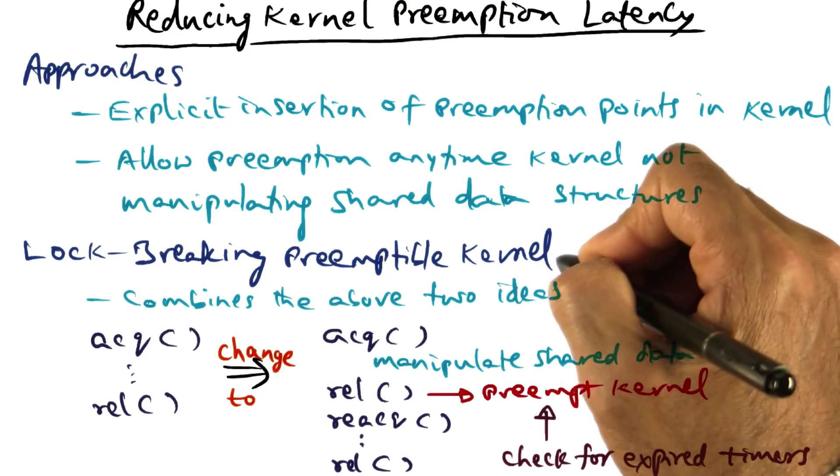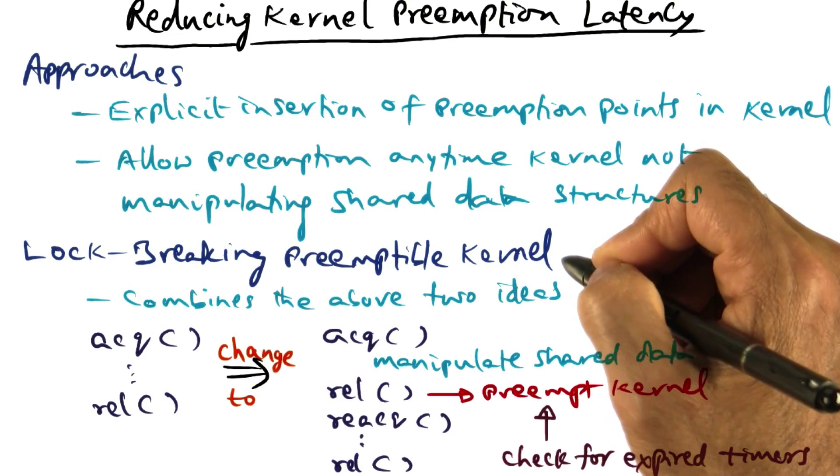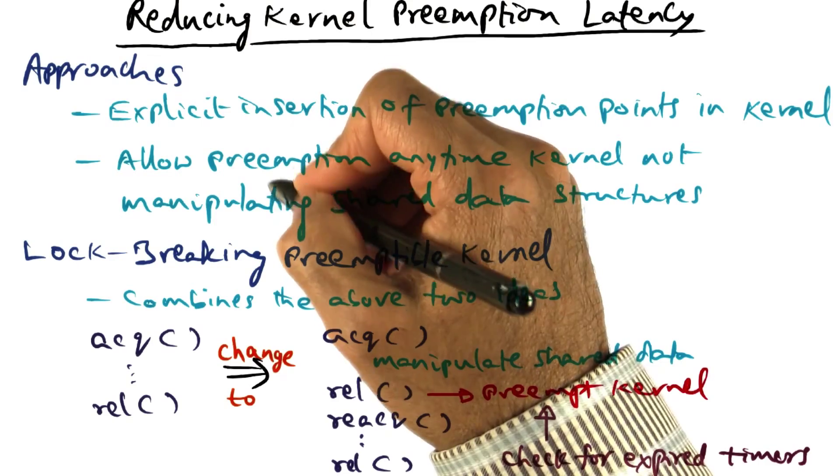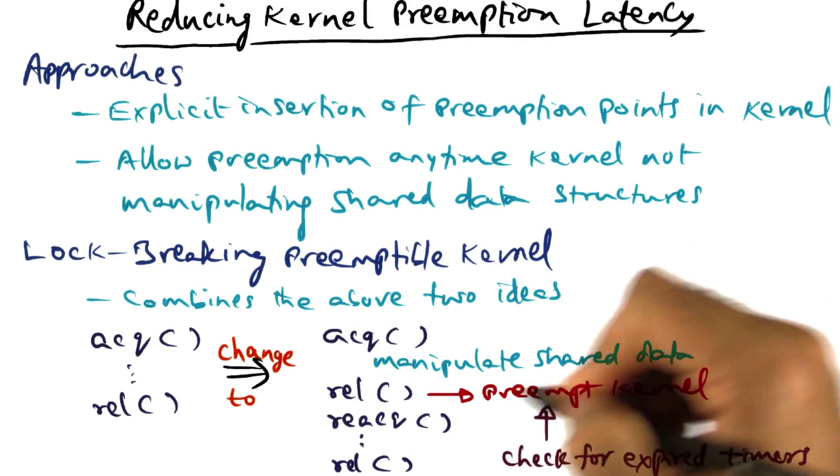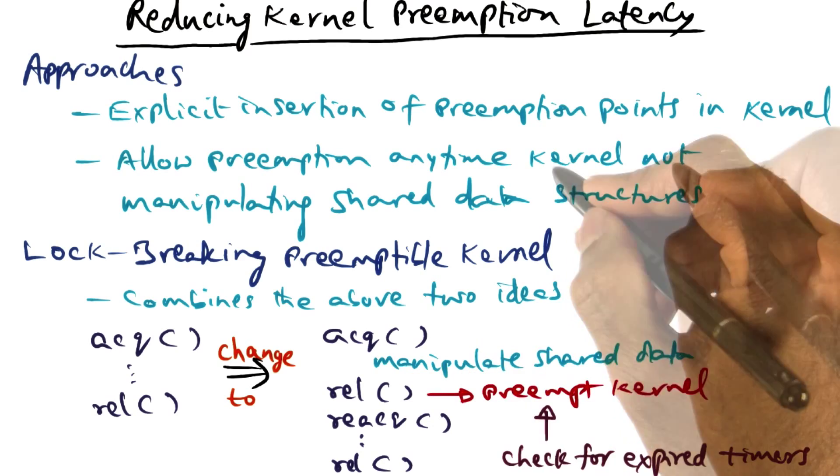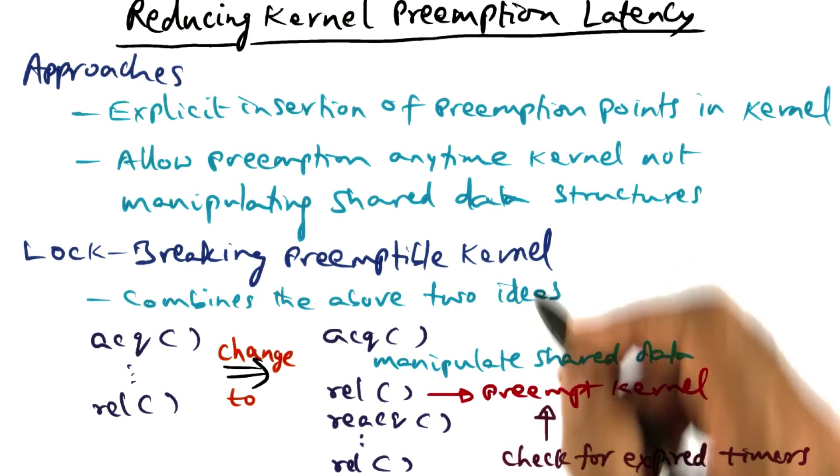So that's the idea in the lock-breaking preemptible kernel that combines these two ideas of explicit insertion of preemption points and allowing preemption any time the kernel is not manipulating shared data structures.